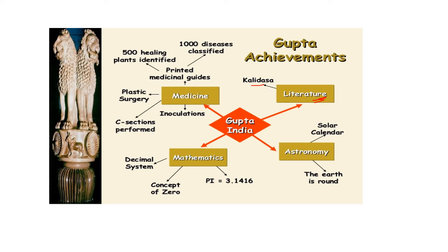Achievements towards astronomy include the invention of the solar calendar during this period. In mathematics, the decimal system, the concept of zero, and pi were introduced during the Gupta dynasty. Achievements towards medicine include plastic surgery; they identified around 500 healing plants, classified 1,000 diseases, performed C-sections, and developed inoculations — all achieved during the Gupta dynasty.